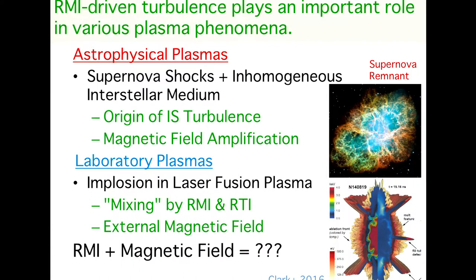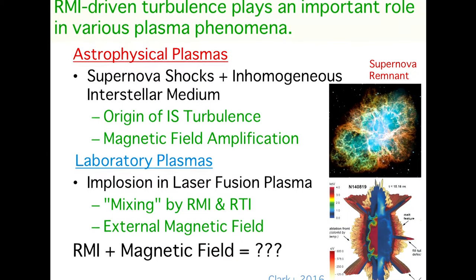Another example is inertial confinement fusion. For the implosion process, the mitigation of mixing by interfacial instability is quite a crucial problem. Also for controlling the implosion, the inclusion of an external magnetic field is seriously discussed now. So it is very important to understand the Richtmyer-Meshkov instability with magnetic field.